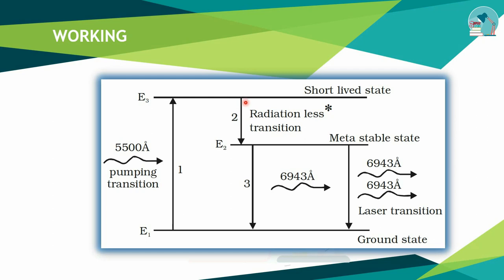From the excited state, the ions transition to a short-lived state, then to a metastable state, and finally back to the ground state, emitting energy. The emission is at 6,943 Angstroms. This is a continuous pumping process — the transition in the Ruby laser produces radiation at 6,943 Angstroms.